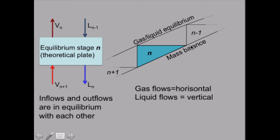Horizontal lines in the XY diagram represent gas flows, while vertical lines represent liquid flows. You can remember that by thinking that on a vertical line, all the points have the same liquid composition, while on a horizontal line, all points have the same gas composition.